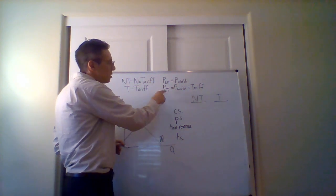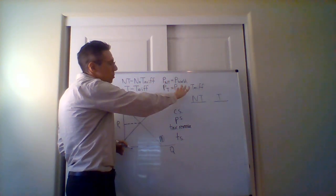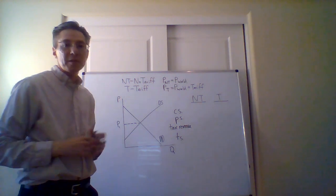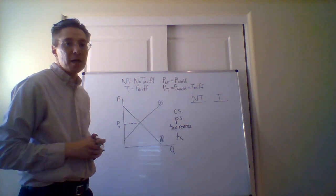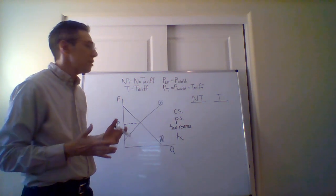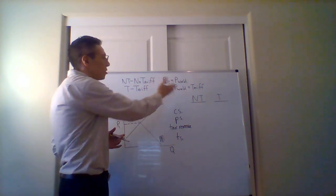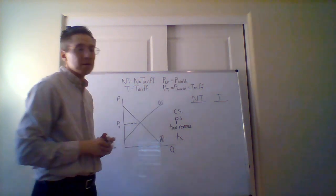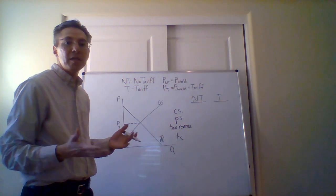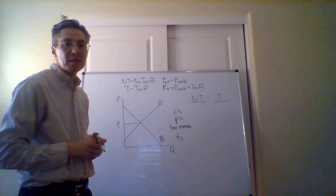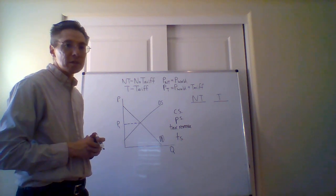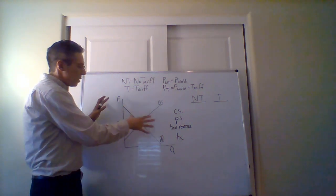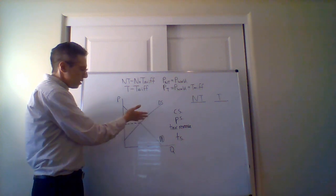Then we have P sub T, which is supposed to be the world price plus the tariff — that's what happens when a tariff is applied. Basically the domestic price becomes the world price but with the tariff added on. Another thing to remember is the tariff is a tax on imports. So we start off with this graph of the domestic market.